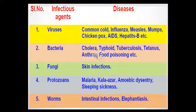Here we are going to discuss certain diseases by category. Viruses cause common cold, influenza, measles, mumps, chickenpox, AIDS, and hepatitis. You should know the category of pathogens so that if asked in the exam you can write the answer. Bacteria cause cholera, typhoid, tuberculosis, tetanus, anthrax, and food poisoning. Fungi cause skin infections. Protozoans cause malaria, kala-azar, amoebic dysentery, and sleeping sickness. Worms cause intestinal infections and elephantiasis, which is caused by the filarial worm. The next question is why it is important that we think of these categories of infectious agents — this we will discuss in the next class.